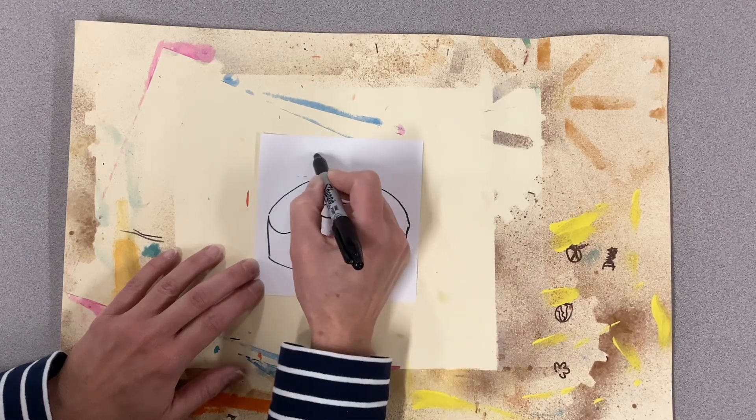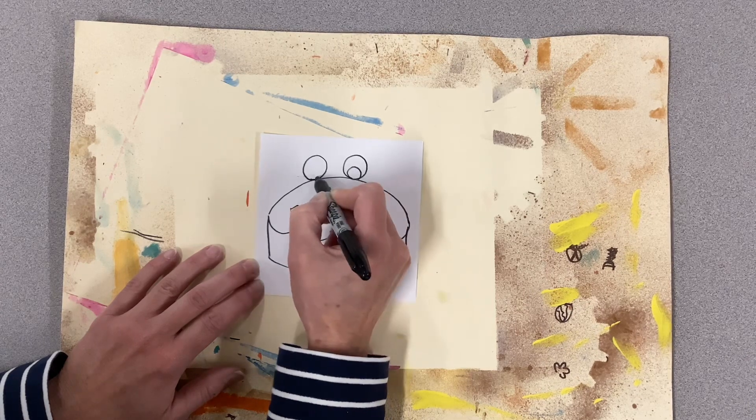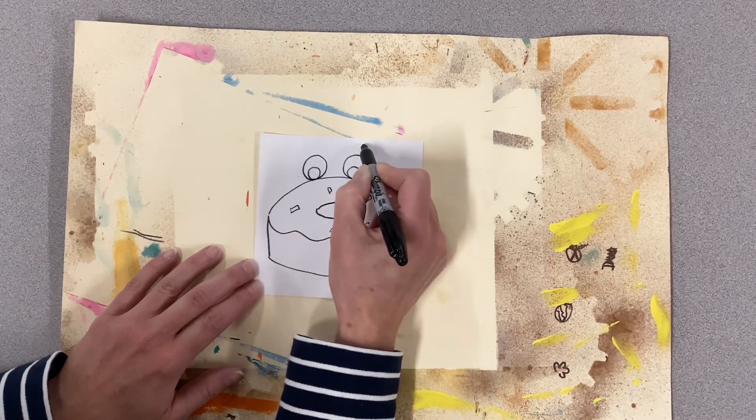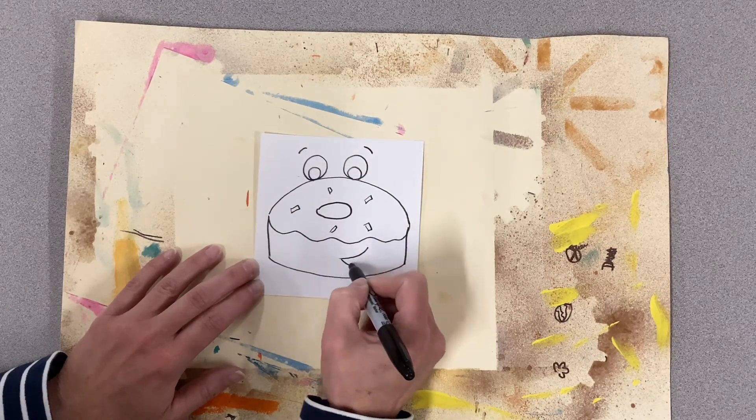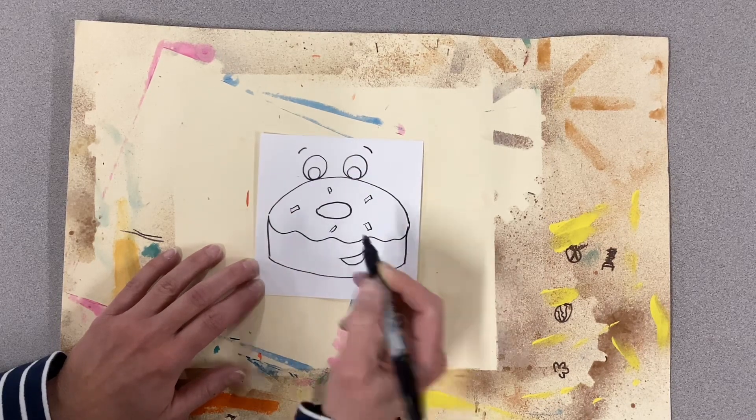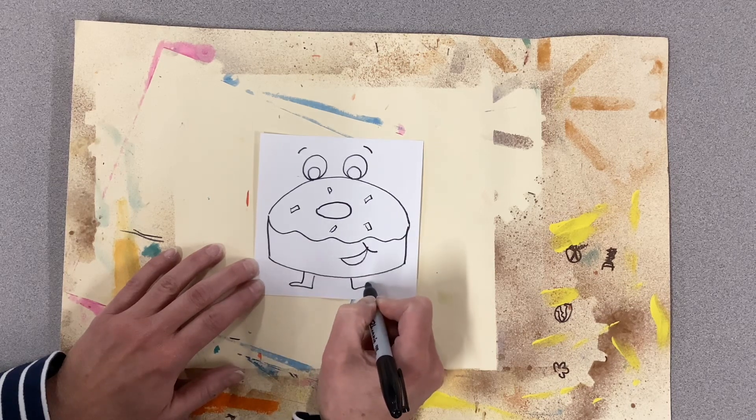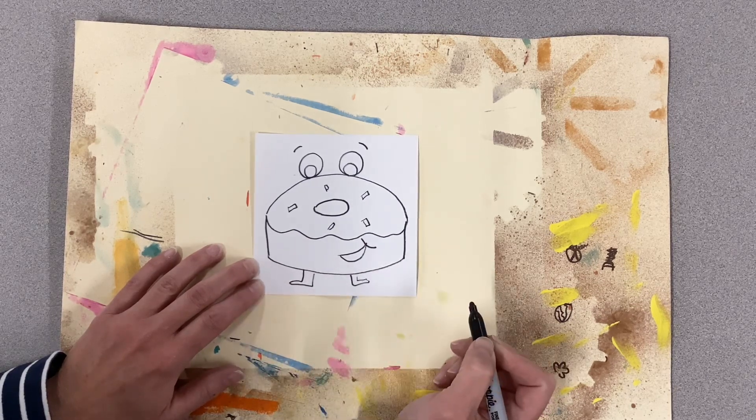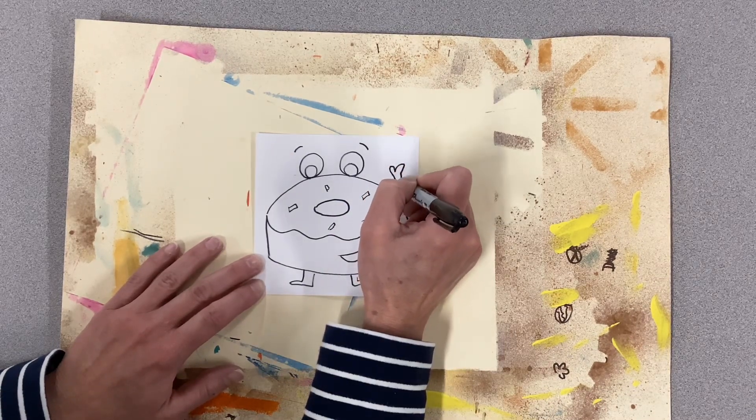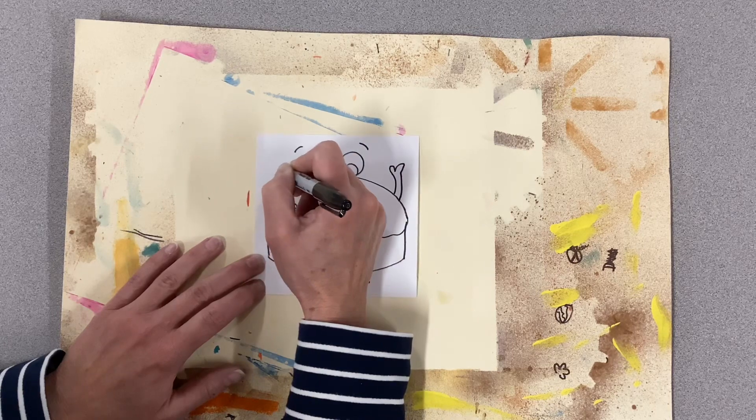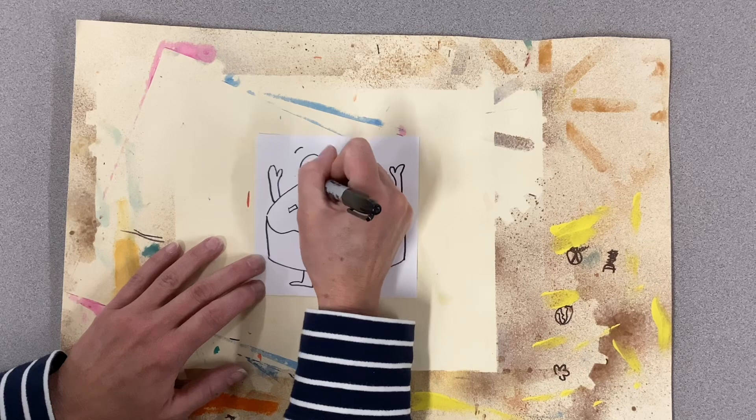You could add some eyes, you could do a little mouth, maybe a pair of legs, you have room for a hand, or leave it a plain donut.